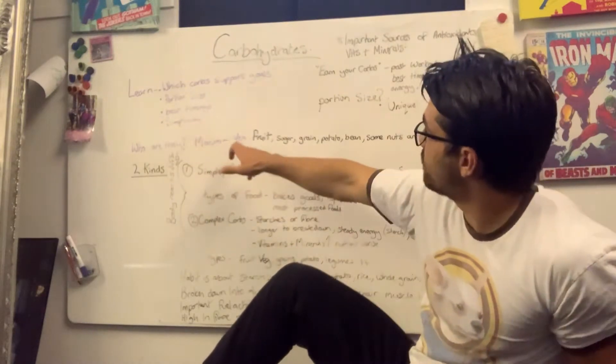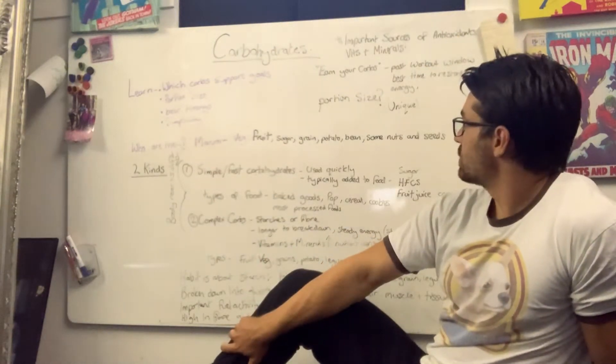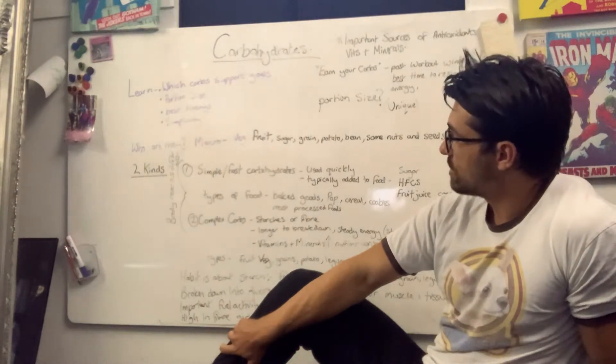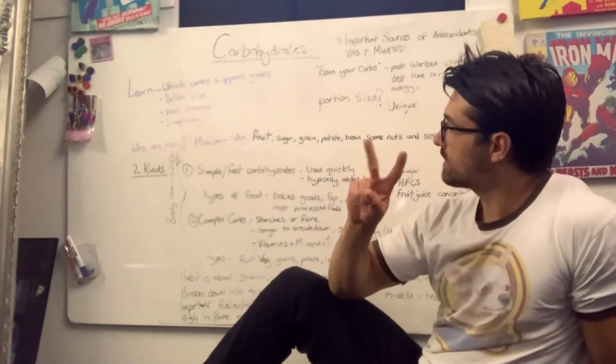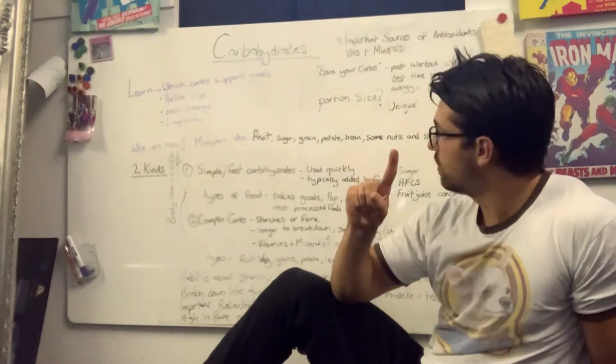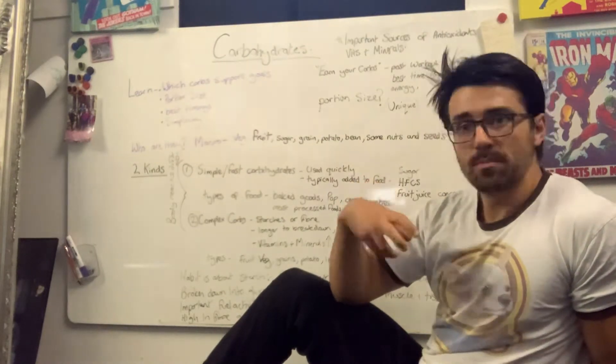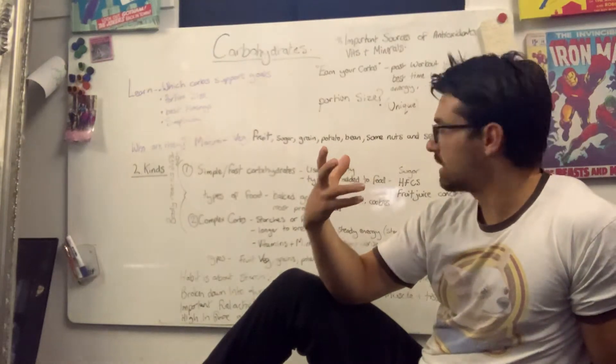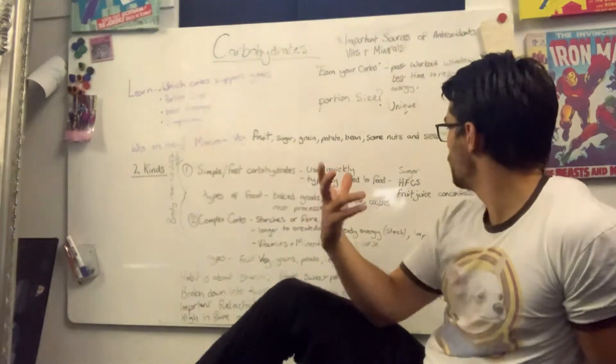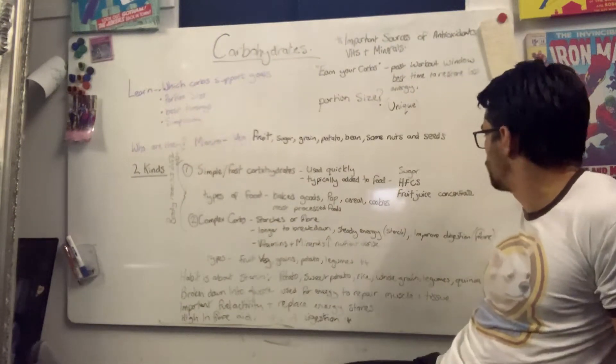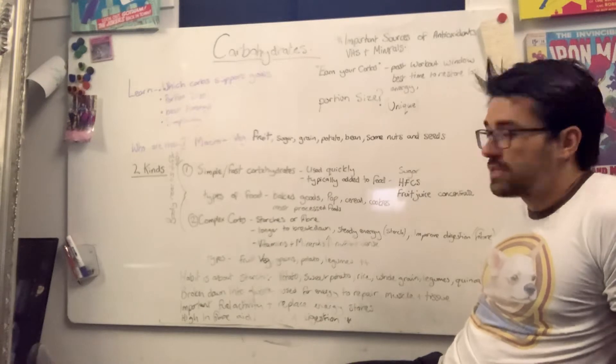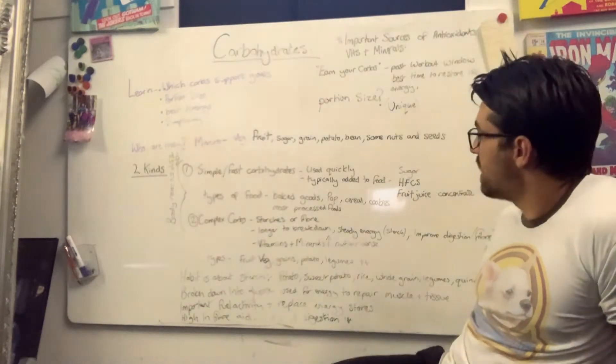Carbohydrates are vegetables, fruits, sugars, grains, potatoes, beans, and some nuts and seeds, just to name a few. So, you've got two different types of carbohydrates. You've got your simple, fast carbohydrates, and your body uses these quickly. They've got no fibre to them. Typically, these are things that are added to food - sugar, high fructose corn syrup, fruit juices from various concentrates.